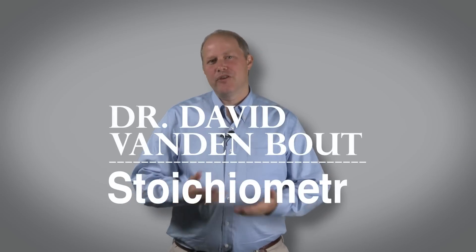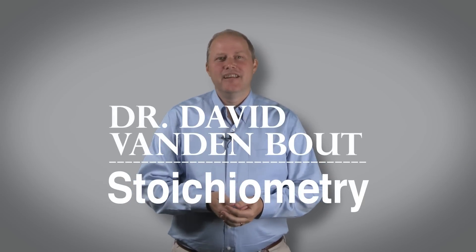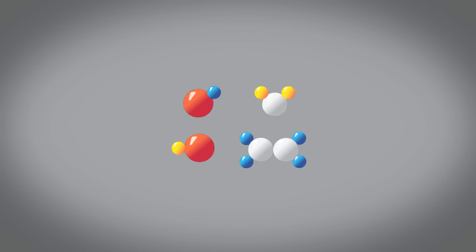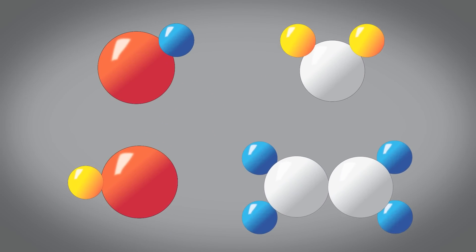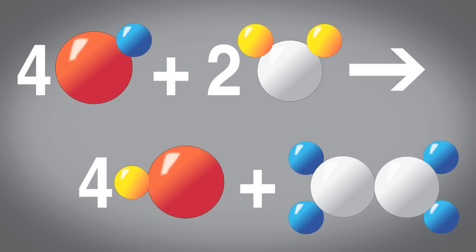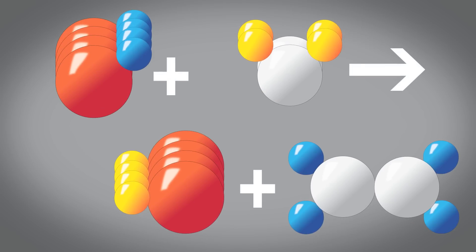Stoichiometry is a term you'll hear in chemistry over and over again. It refers to the relationship between ratios of numbers of atoms within a compound or numbers of molecules or compounds in a chemical reaction.